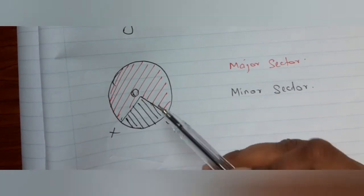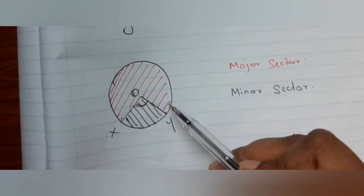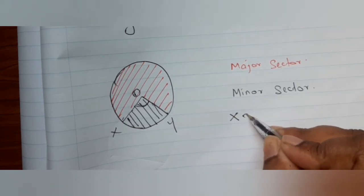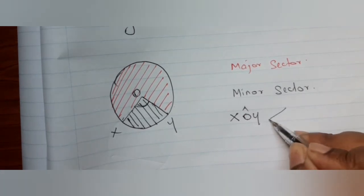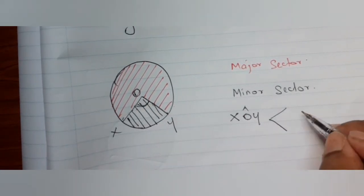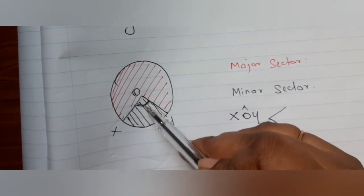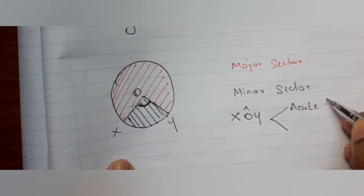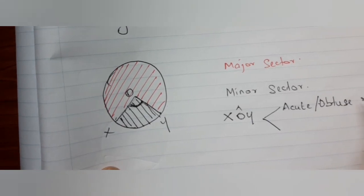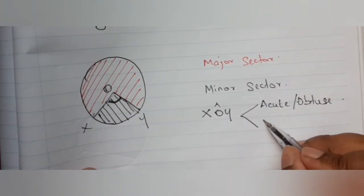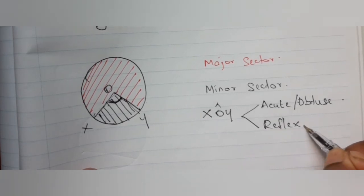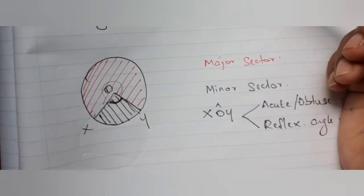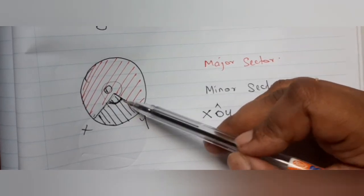Another thing we need to know is the central angle — the angle formed by the two radii at the center. There are two types: the smaller angle (which can be acute or obtuse) and the reflex angle on the other side. The angle XOY is the central angle formed by the sector of the circle.